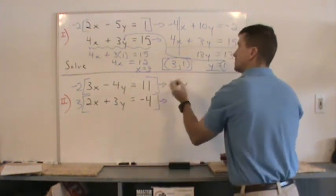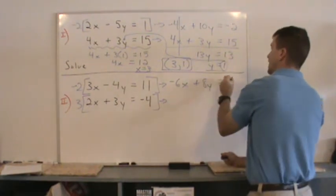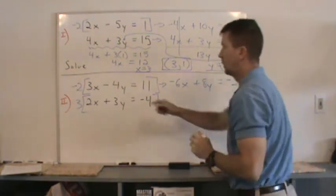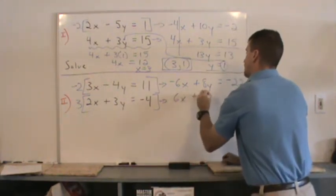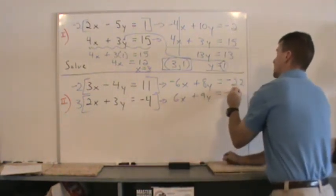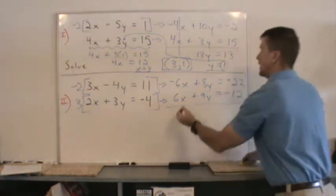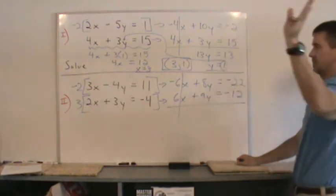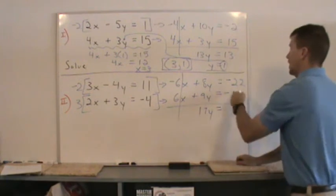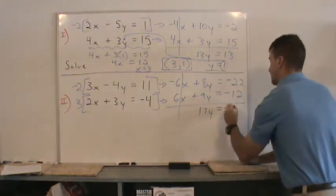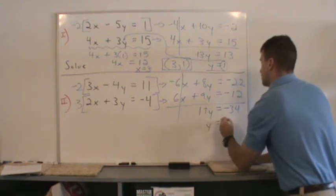Negative 6x plus 8y equals negative 22. Now, multiply 3 to this entire equation. I get 6x plus 9y equals negative 12. And then when I add down by the elimination method, that goes bye-bye. 8 plus 9 is 17. 17y. Negative 22 plus negative 12 is negative 34. Divide the 17 on both sides. And y equals negative 2.